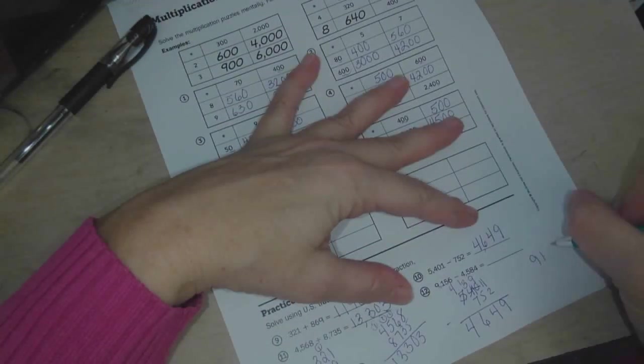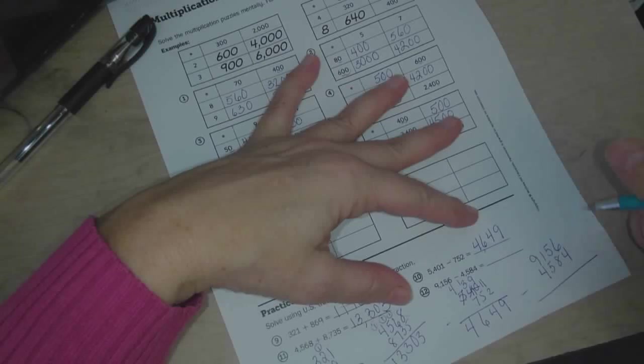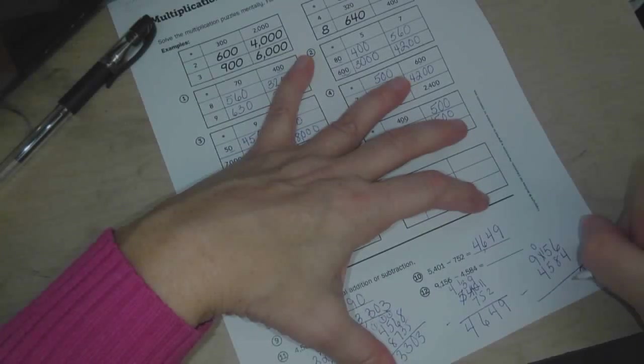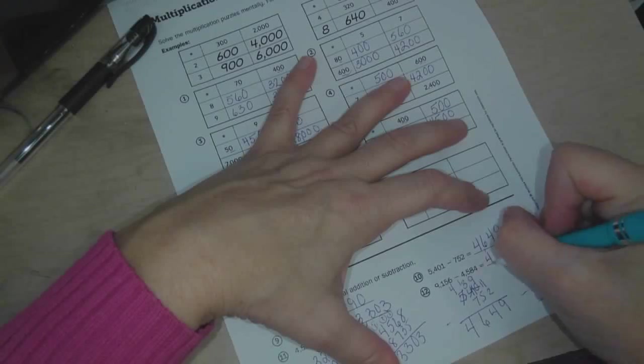And then the last one, 9,156 minus 4,584. 6 minus 4 is 2. 15 minus 8 is 7. 10 minus 5 is 5. And 8 minus 4 is 4. So 4,572.